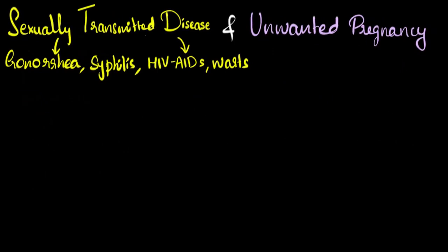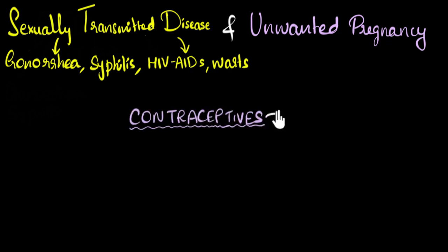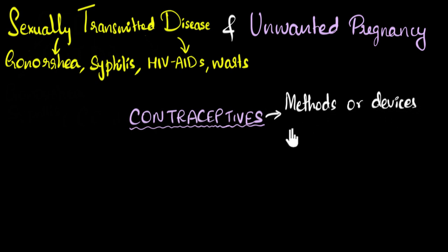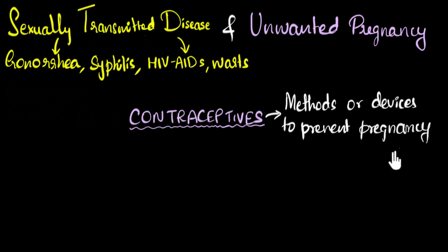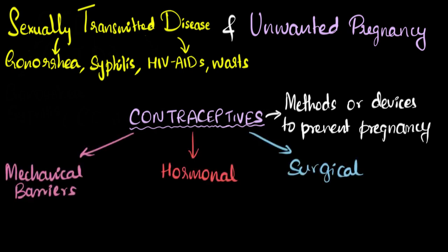So now let's talk about how we prevent them. We can prevent them by using what we call contraceptives. Contraceptives, in short, can be thought of as methods or devices to prevent pregnancy. So how many types of contraceptives do we have? Broadly, we can classify contraceptives into three kinds: mechanical barriers, hormonal methods, and surgical methods.